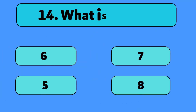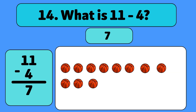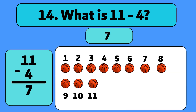What is 11 minus 4? The answer is 7. We start with 11 basketballs and take away 4. Let's count: 1, 2, 3, 4. We have 7 basketballs left.